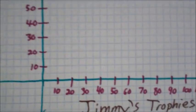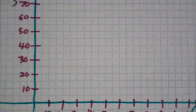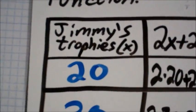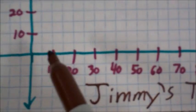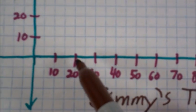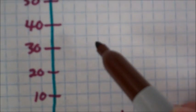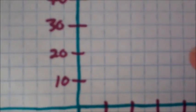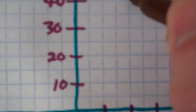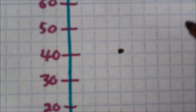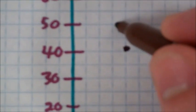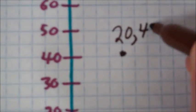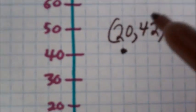When we graph this, we need to look back at our number of Jimmy's trophies compared to the number of Billy's trophies. When Jimmy had 20, Billy had 42. So we need to find Jimmy's. I'm going to go over 20. And then for Billy, we're going to go up to 42. We also need to name that ordered pair. So this is (20, 42). Remember, x comes before y.